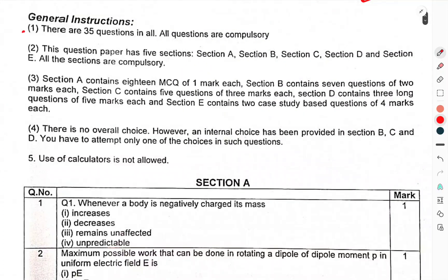General instructions: there are 35 questions in all, all questions are compulsory. This question paper has five sections, section A, section B, section C, section D and section E.